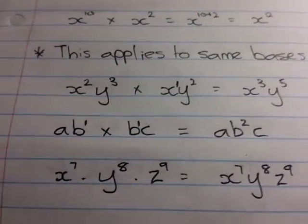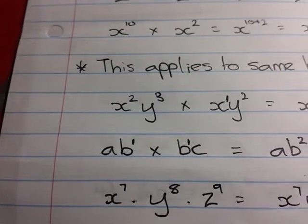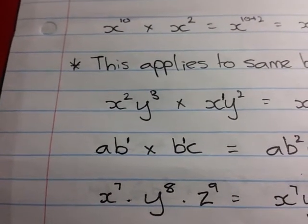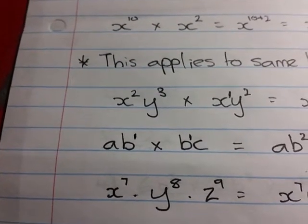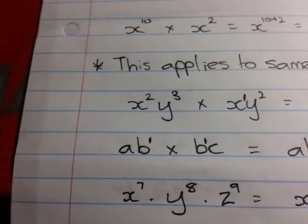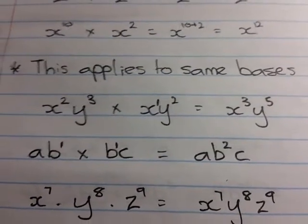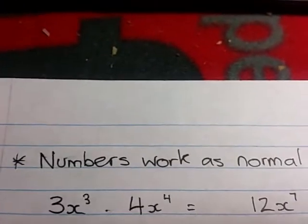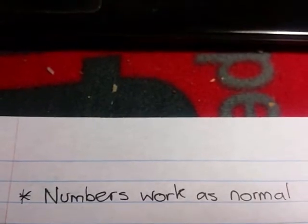And then if you have a situation like x to the 7 times y to the 8 times z to the 9, with no other x's, y's or z's to multiply with each of them, they can all just be put together.